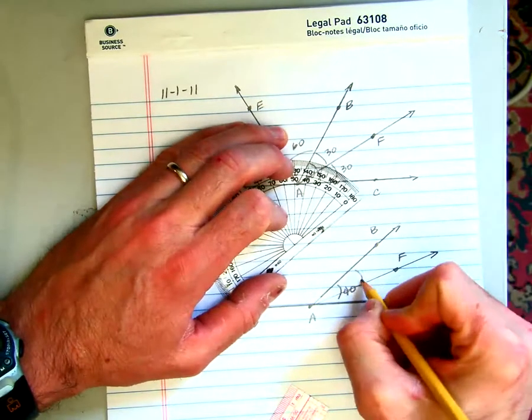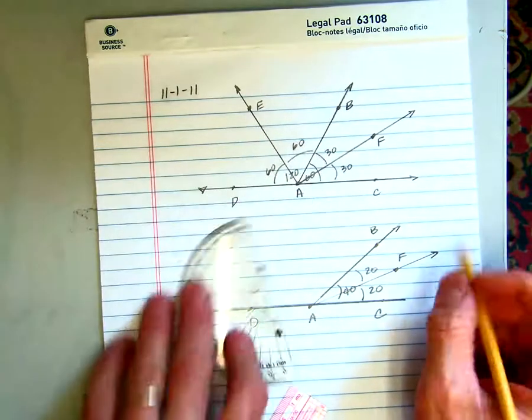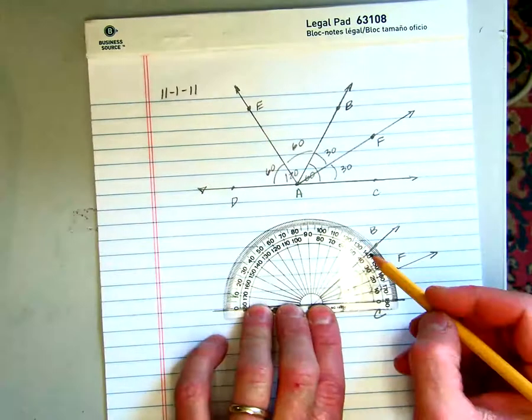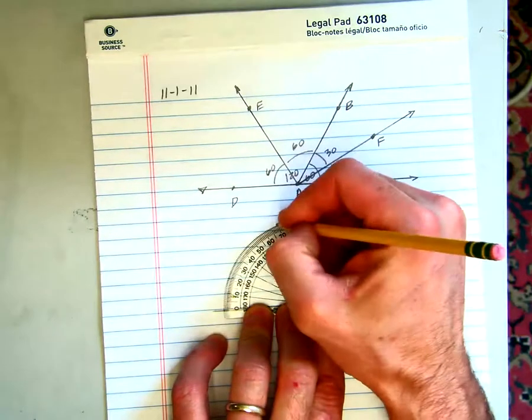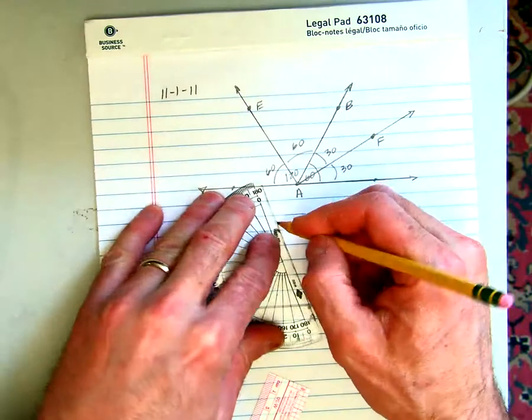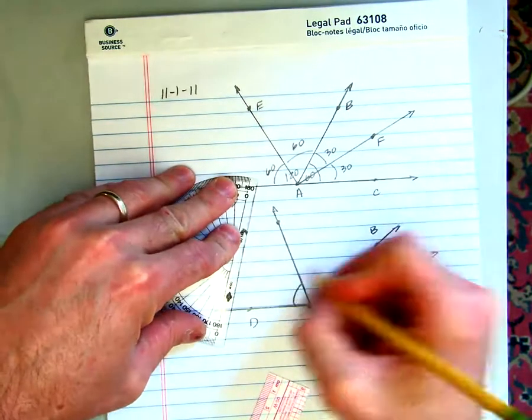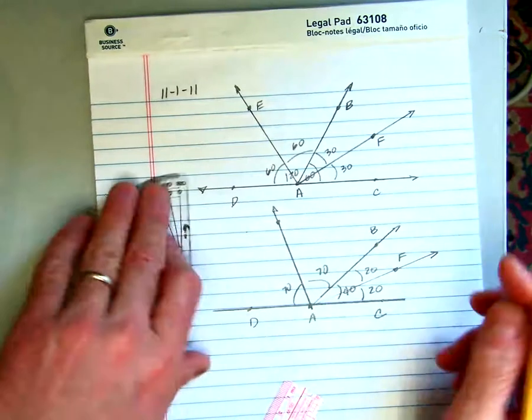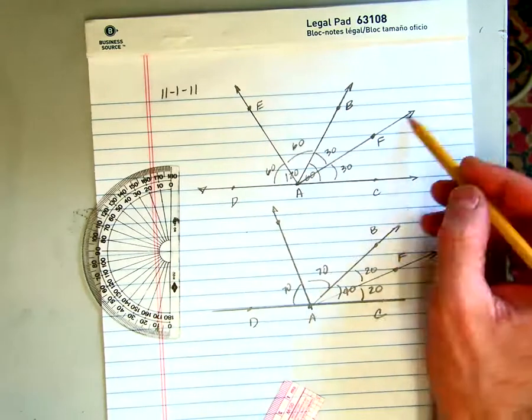There's where F would be, and these would be 20 and 20. Of course, if that's 40, then we would have to take 140 as the supplement to it, so 70 would be half the measure.